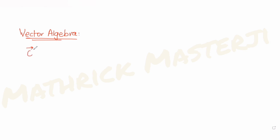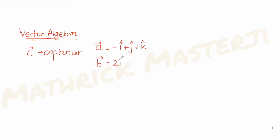Hi guys, I hope you are all doing well. Today's question is from the topic of vector algebra. The question tells us: let vector c be coplanar with two given vectors — vector a is minus i-cap plus j-cap plus k-cap, and vector b is 2i-cap plus j-cap minus k-cap.